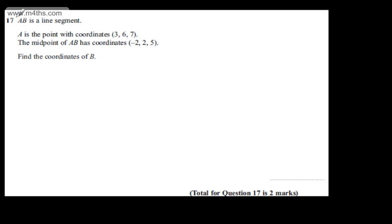This is question number 17. We're told AB is the line segment. A is the point with coordinates 3, 6, 7. The midpoint of AB has coordinates minus 2, 2, 5. For two marks, we're asked to find the coordinates of B.